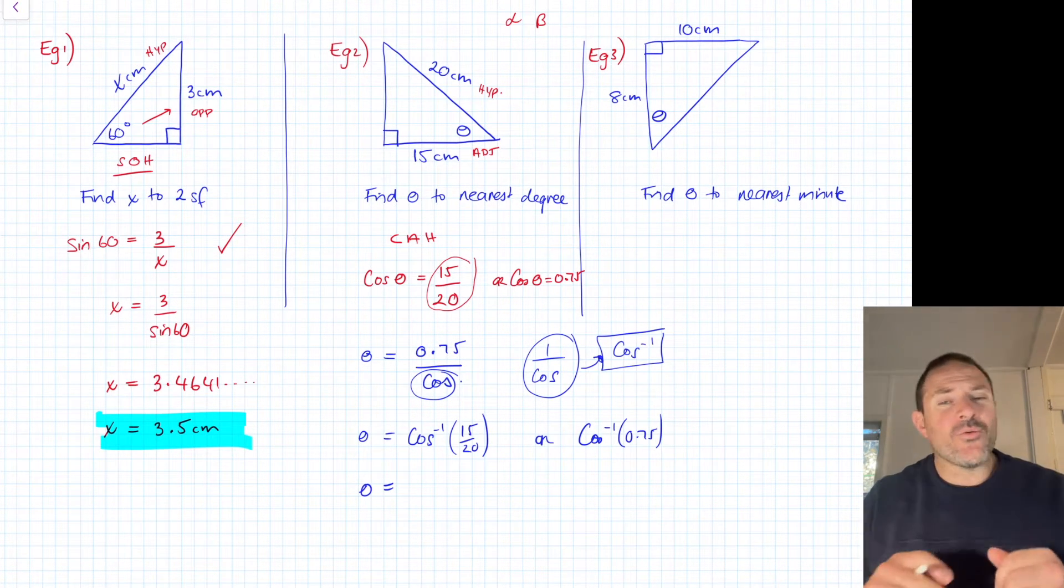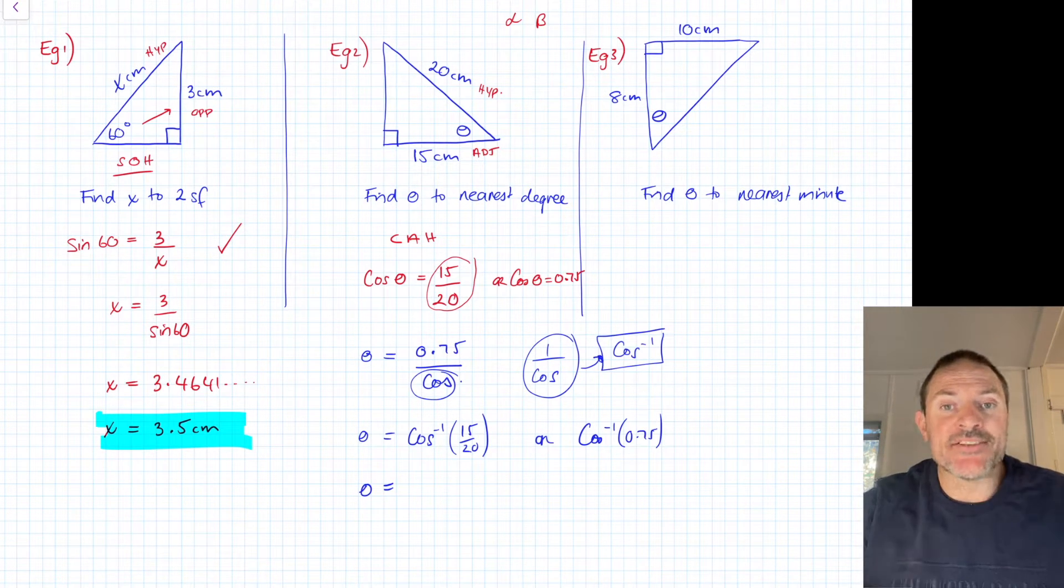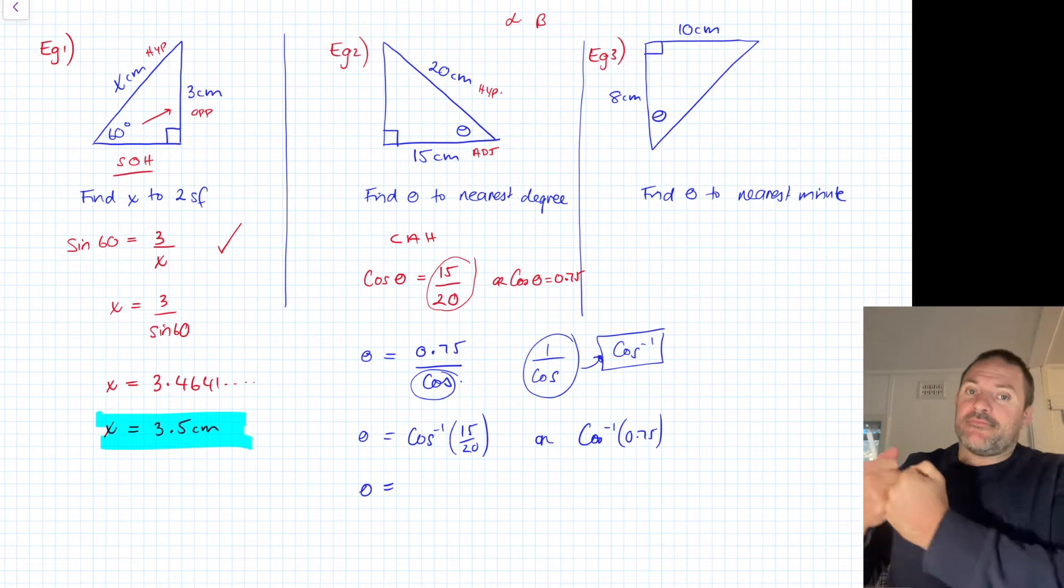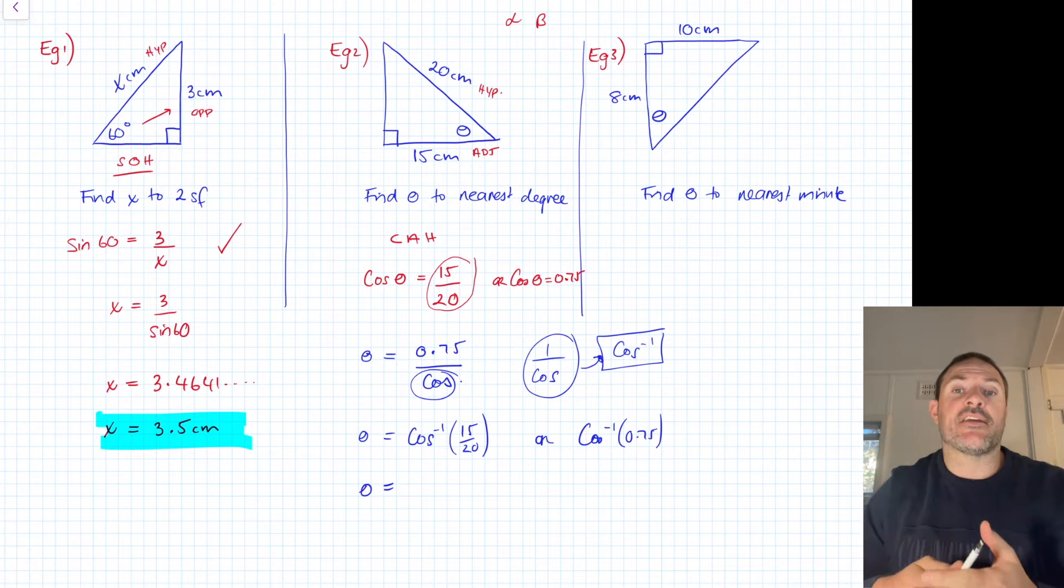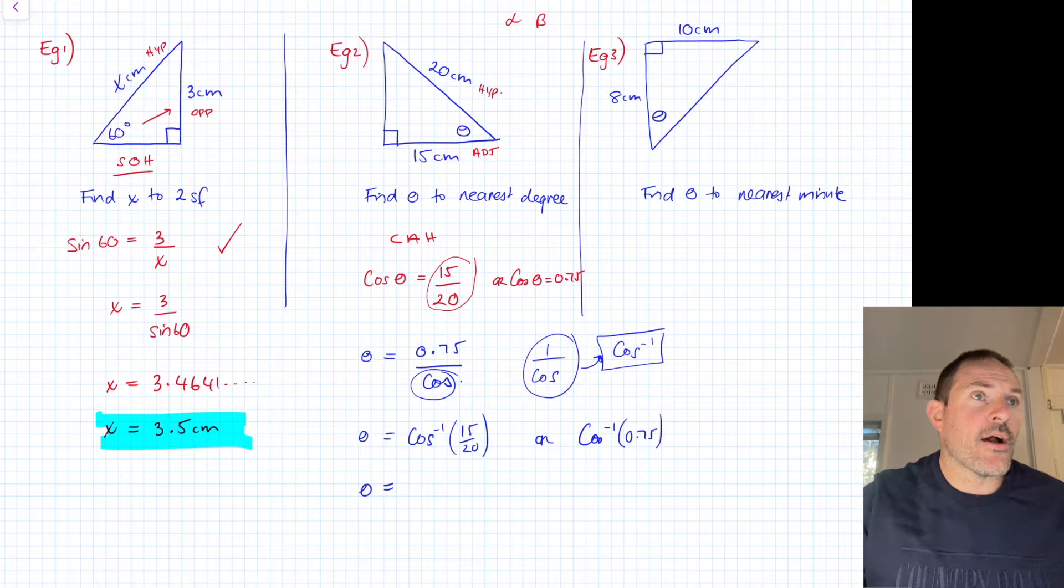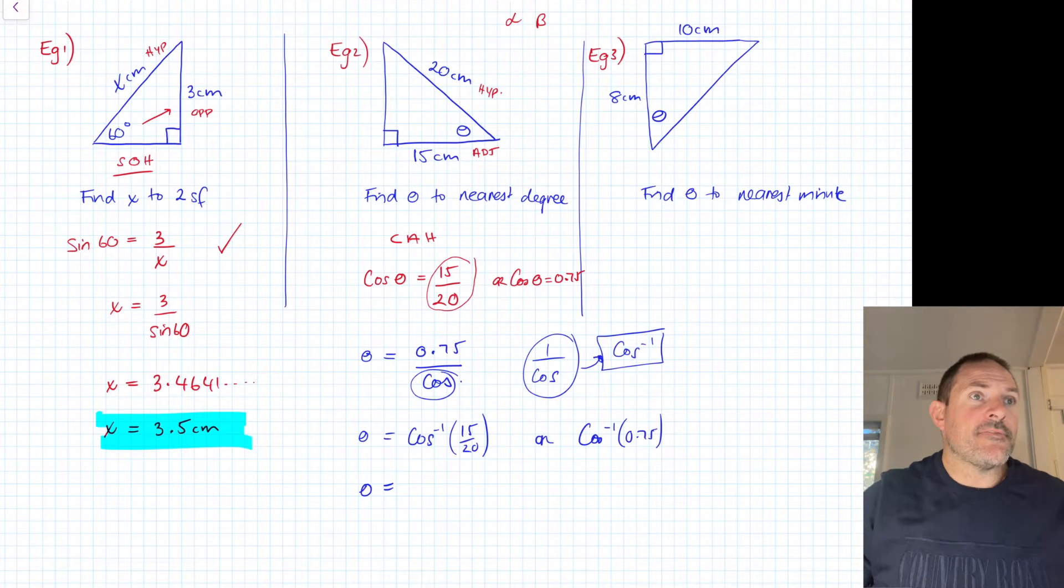So the big idea here: whenever you find an angle, no matter what rule, even when we do non-right angle down the track, whenever you find an angle you must press shift at some stage. If you don't press shift at all, then something's going to miss. Because when you find an angle, you need to separate the theta and the sine, cos, or tan, but we can't divide by those things. So we have to do cos negative 1, sine negative 1, tan negative 1.